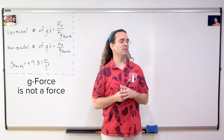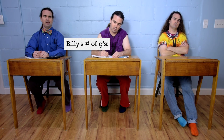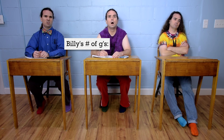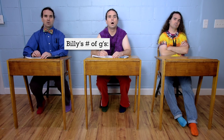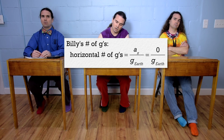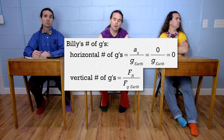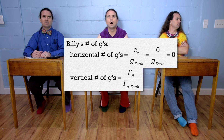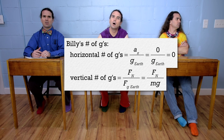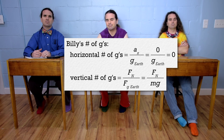Billy, please calculate the number of g's you are currently experiencing. Calculate how many g's I am experiencing right now? Yes, right now. Vertical or horizontal? Both of them, please. Okay, horizontal g's equals my acceleration in the x-direction divided by the acceleration due to gravity. My acceleration in the x-direction is zero, so my horizontal number of g's is zero. For vertical g's, it's my force normal divided by my force of gravity. We can substitute in mass times acceleration due to gravity for the force of gravity, but I don't know my mass, so I can't solve for my vertical number of g's, I don't think.